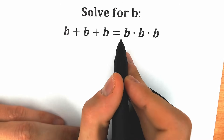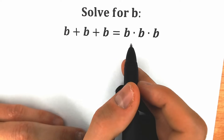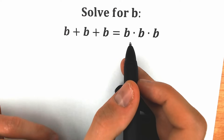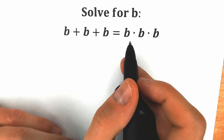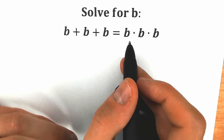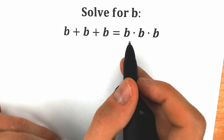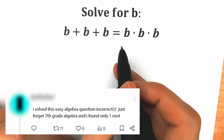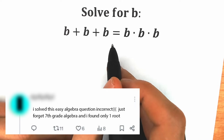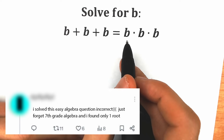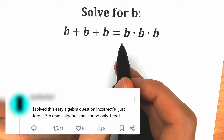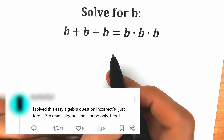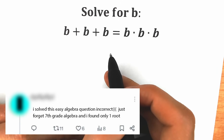We have b plus b plus b equal to b times b times b. A lot of students might be saying, why do you record this video? This is a very easy algebra question from the 7th grade, so I can easily solve it in a few seconds. But one student wrote a comment under my post about this question saying he had this on their math exam and he solved it absolutely incorrect. So let's try to solve this question completely and step by step.